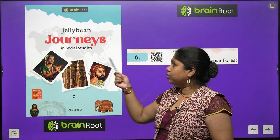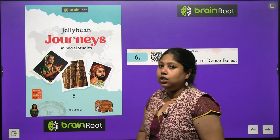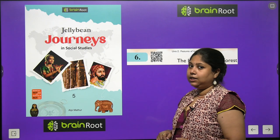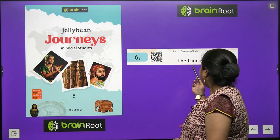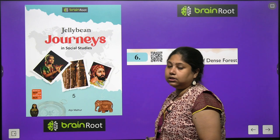Hello my dear children, welcome back to your SST class. I am your teacher and mentor Ananya, and I am back with a new lesson of your book Jellybean Journeys in Social Studies for class 5 by Brainroot Publications. So far we have completed 5 chapters in this book and today we are about to start chapter number 6 — 'The Land of Dense Forest.' Today we are going to study about the different kinds of forest.